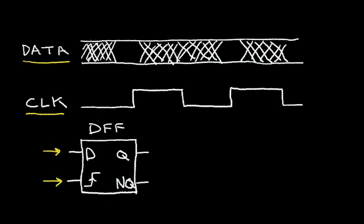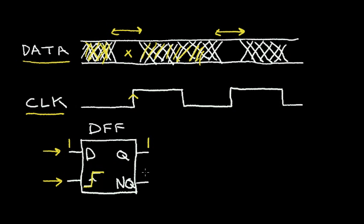Notice that my data signal can be changing during this time, and then there's a stable period here. And again, the data can be changing, and then I have another stable period for the data. What I want to do with this D flip-flop is when the clock signal transitions from low to high, I want to grab this data and present the data at the Q output and the NQ output. For example, if the data input is a 1 when the clock signal transitions high, this 1 will be transferred to the output Q. The NQ will be the opposite signal — it will be a 0.